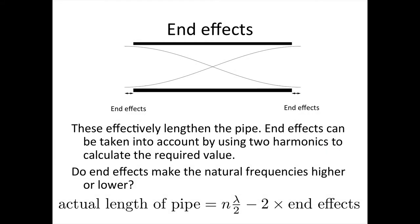Whenever we're using open pipes, open at one end or open at both ends, we need to account for end effects. So end effects occur because the anti-node doesn't actually occur at the end of the pipe. It actually occurs a little bit outside the end of the pipe, which effectively lengthens the pipe.